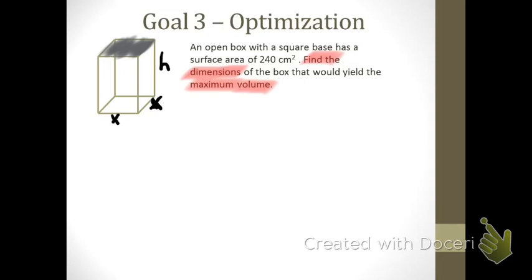We're trying to maximize volume, so we need a function that calculates it. For rectangular prisms, you multiply length times width times height, so volume equals x times x times h, or x² times h. However, the volume is now calculated with two variables. To maximize it using calculus, we need volume in terms of one variable — we'll choose x — so we need to use other information from the problem.